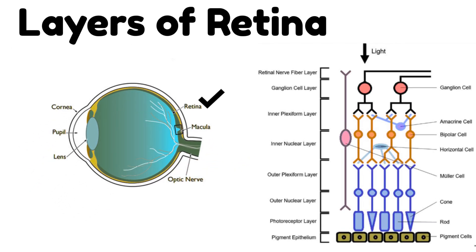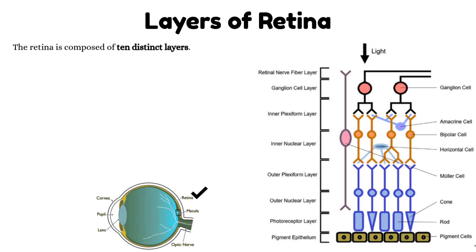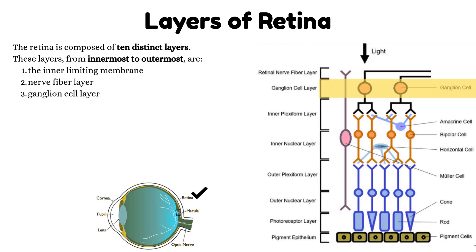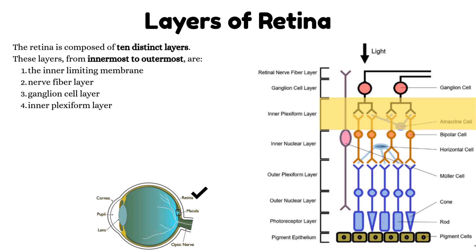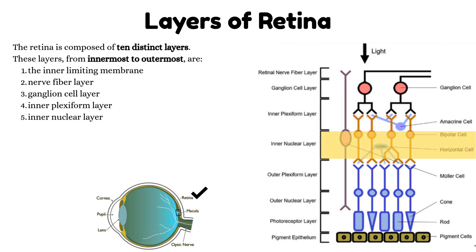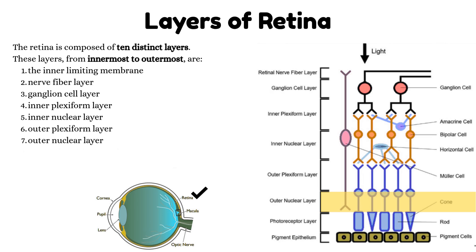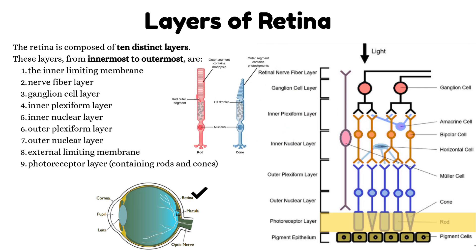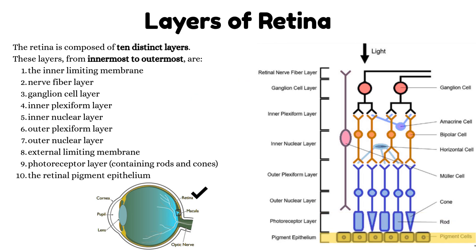Let's discuss the layers of retina. The retina is composed of 10 distinct layers. From innermost to outermost, these are: the inner limiting membrane, nerve fiber layer, ganglion cell layer, inner plexiform layer, inner nuclear layer, outer plexiform layer, outer nuclear layer, external limiting membrane, photoreceptor layer containing rods and cones, and the retinal pigment epithelium.